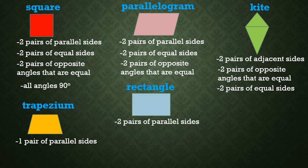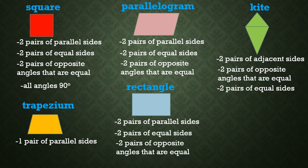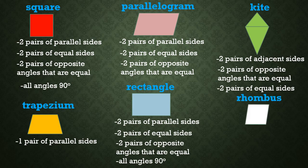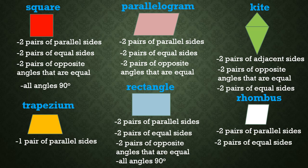Rectangle. A rectangle has two pairs of parallel sides, two pairs of equal sides, two pairs of opposite angles that are equal, and all angles are 90 degrees. Rhombus. A rhombus has two pairs of parallel sides, two pairs of equal sides, and two pairs of opposite angles that are equal.